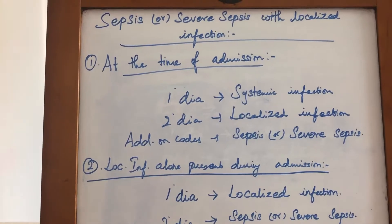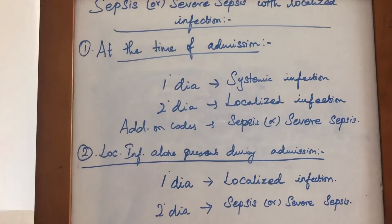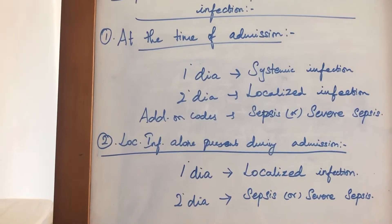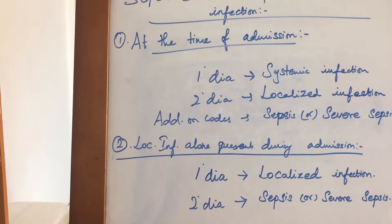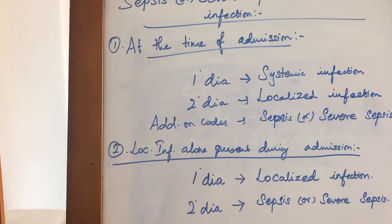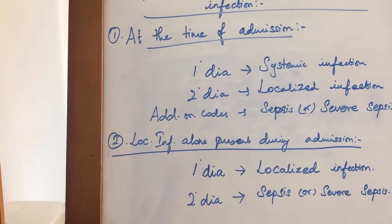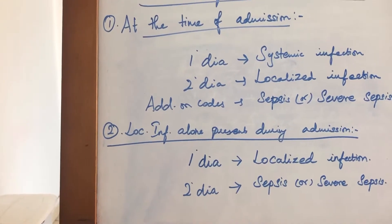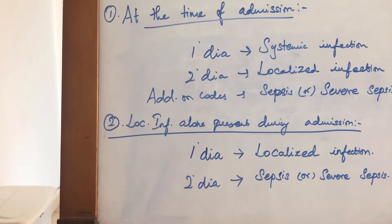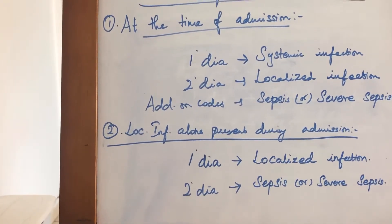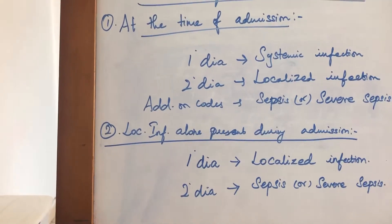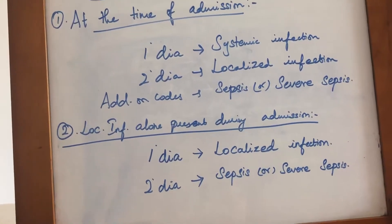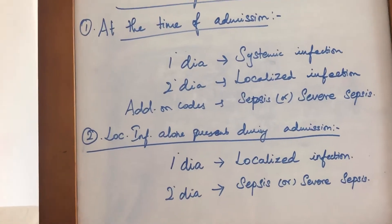When a patient is admitted with Sepsis or Severe Sepsis along with a localized infection, and all three conditions are present at admission time, the principal diagnosis is the systemic infection. The secondary diagnosis is the localized infection — for example, Pneumonia, which affects one organ.